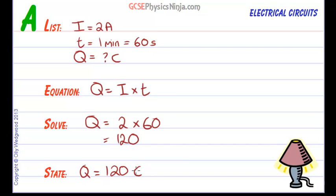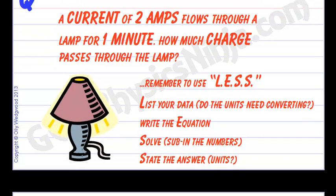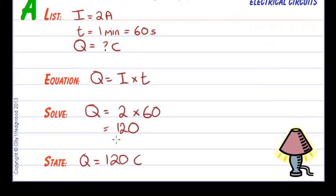That's how many bags of charge, if you like, or we call them Coulombs have flowed in this lamp in that time, in one minute. 120 Coulombs.